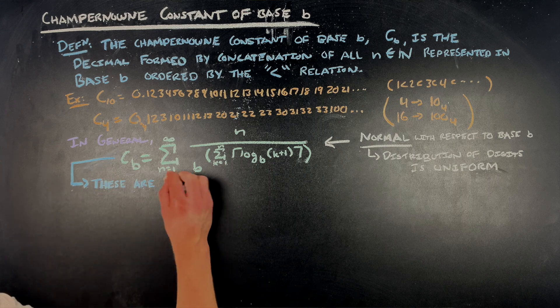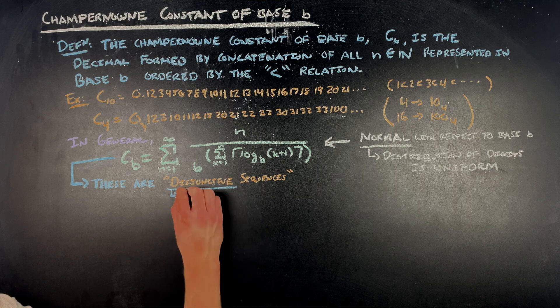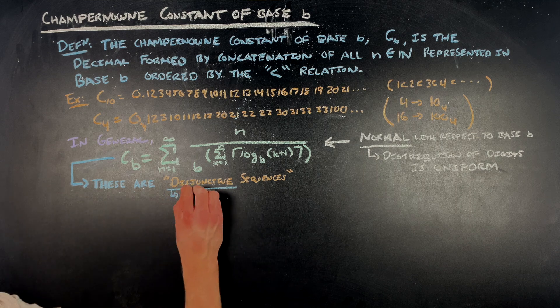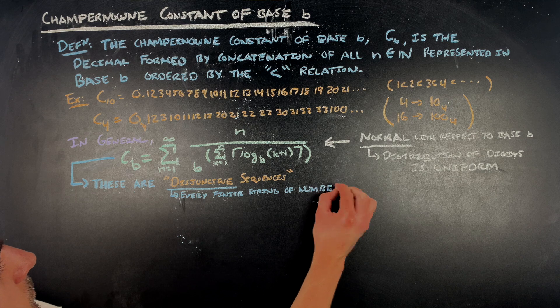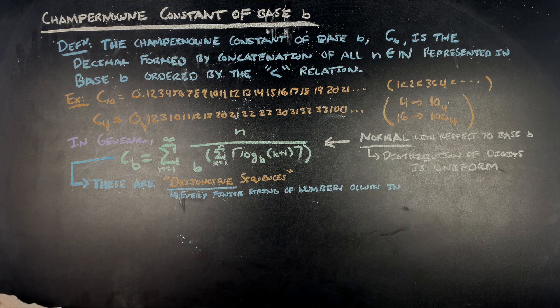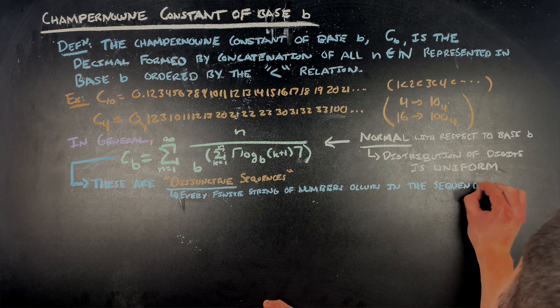In particular, the numbers are examples of disjunctive sequences. That just means that every finite string of digits occurs in the sequence. This happens by the constructive definition of C sub b, since they are explicitly formed by concatenating all possible finite strings of the numbers 0 through b-1 for a given base b. In most problems we encounter in the real world, we don't usually encounter disjunctive sequences because they can be pretty inaccessible when you're not in the context of these nice C sub b constants.